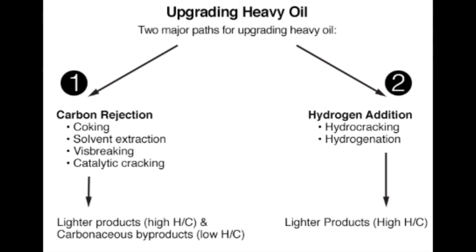So in a refinery, both of these pathways — carbon rejection and hydrogen addition — are used to produce the products that are in demand for the market in the optimum fashion, meaning the most cost-effective way.